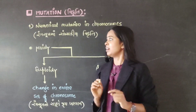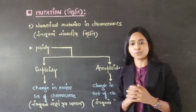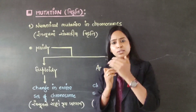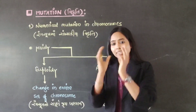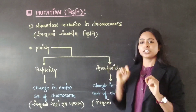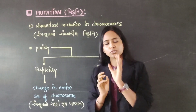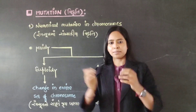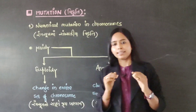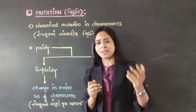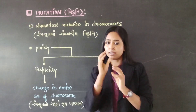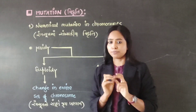The first type of mutation is the numerical mutation in the chromosome. In other words, when there is an increase or a decrease in the chromosome number, we will talk about that. The chromosome number in any organism — we use a word for it, which is called Ploidy. In every single organism, whether it is a plant, an animal, or any organism, the set of chromosomes is fixed.